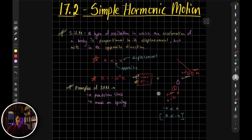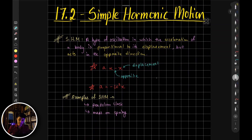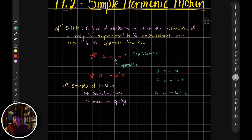Now we know the definition and the reasoning behind simple harmonic motion. You might wonder where we are getting this equation from and how it is derived. Since a is proportional to minus x, this is the proportionality. If you turn it into an equation, a equals minus kx. In simple harmonic motion, the constant is going to be omega squared, so it is a equals minus omega squared x. There is a big derivation for why the constant is supposed to be omega squared and not just any other constant.